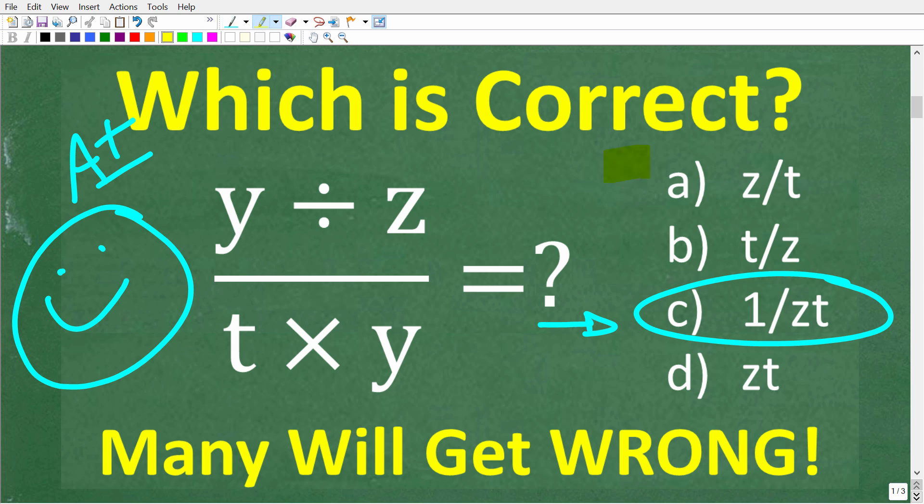Now, just a tip for those of you that are still math students, never leave a multiple choice question blank. Always take a guess. So if you guessed that the right answer is 1 over zt, well, congratulations.